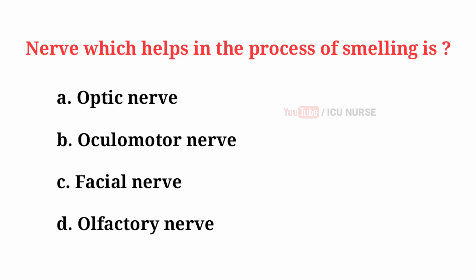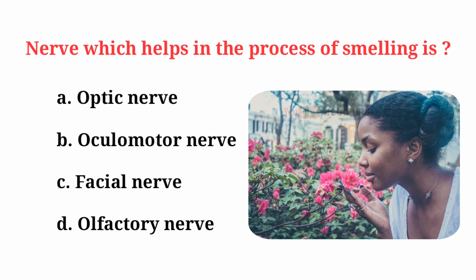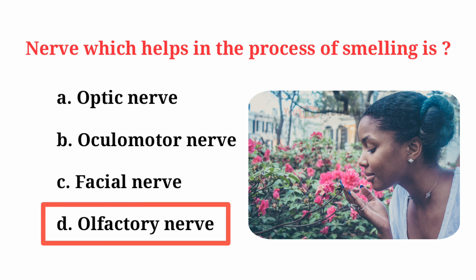Nerve which helps in the process of smelling is — the correct answer is D: Olfactory nerve.